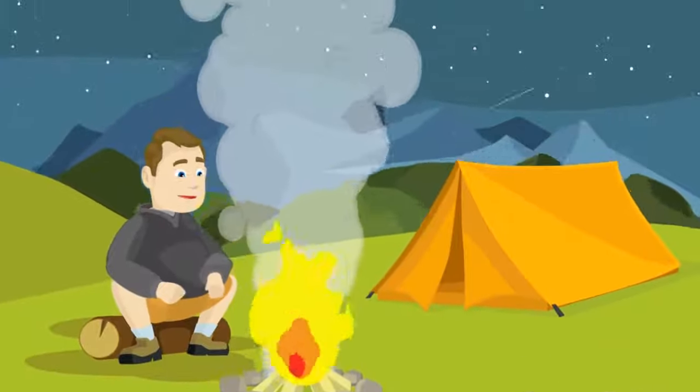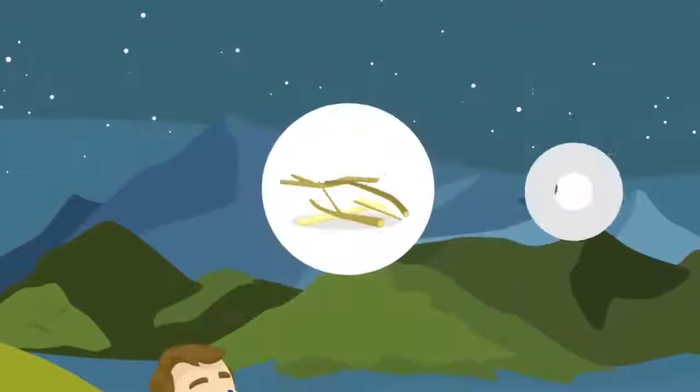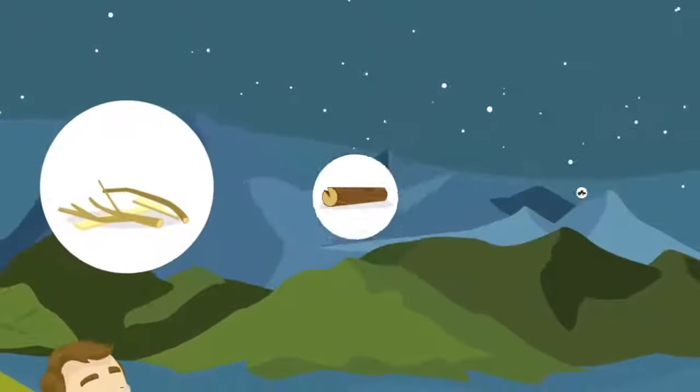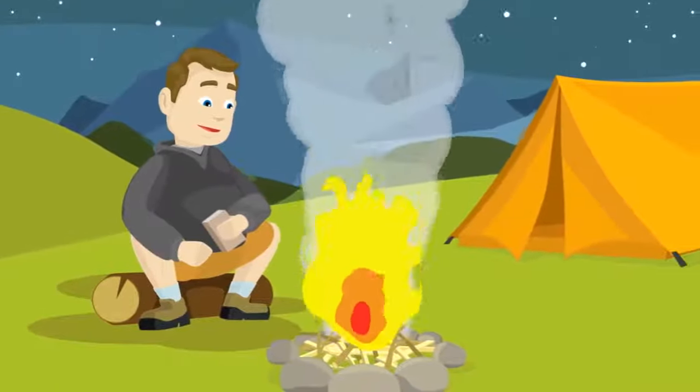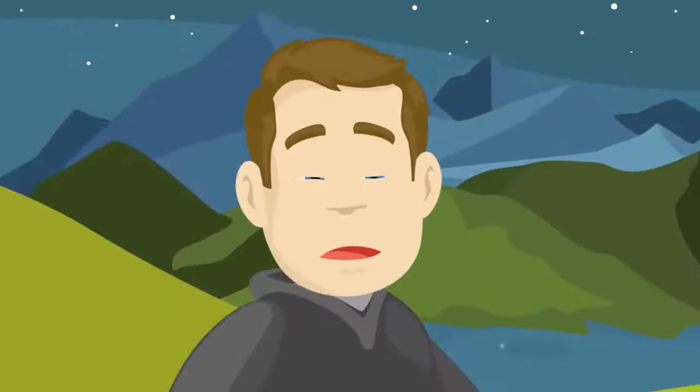When you build a campfire there are three types of fuel that you can use: kindling, logs, and coal. Now the kindling is the easiest to catch on fire. It burns fast and if you're not careful it'll be gone before the larger logs even catch on fire.